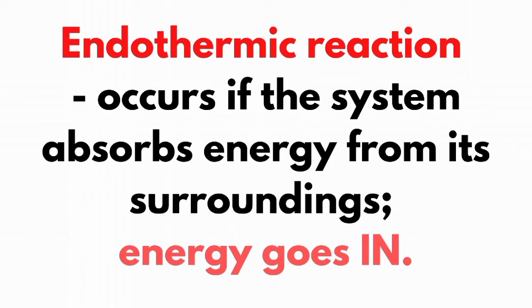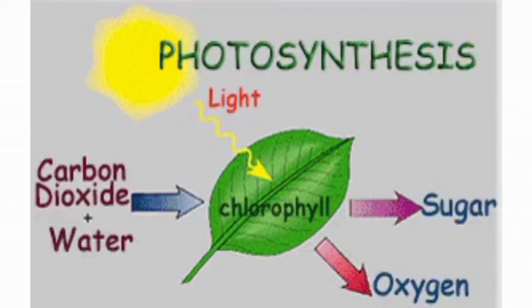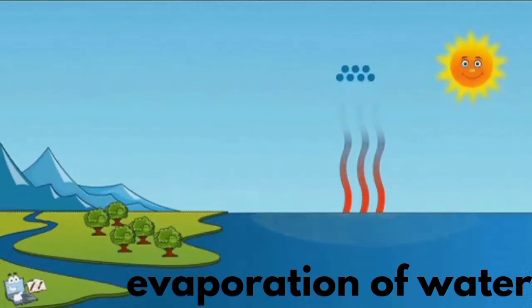An endothermic reaction occurs if the system absorbs energy from its surroundings — energy goes in. Examples include baking bread, producing sugar by photosynthesis, and evaporation of water.